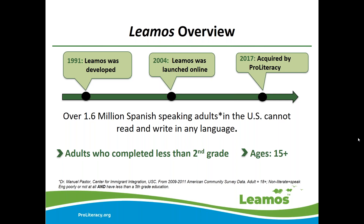I'm going to start by giving a brief overview of what LLAMOS is. Since 1991, LLAMOS was created to address the pressing need for basic Spanish literacy instruction among the Latino community. As of December 2017, ProLiteracy became the home of LLAMOS with a focus on expanding it throughout the United States and Latin American cultures. It had originally been developed by a smaller organization in California that saw the need for this product in their own community, and we're excited to be able to offer it to our network of member programs and literacy providers throughout the United States and other countries.